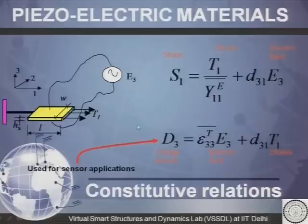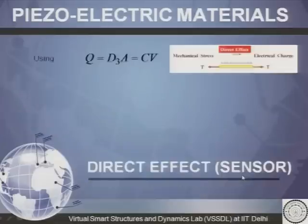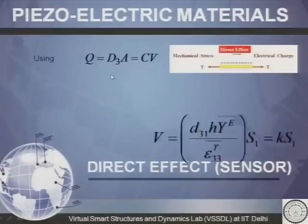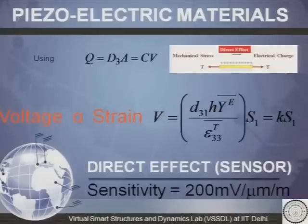This equation is used for the sensor application. When the piezoelectric material is used as a sensor, this equation is used, and when E₃ is 0 — when there is no electric field — only stresses are being produced and the equation reduces accordingly. Using the basic relation, the voltage generated by the piezoelectric material is given by this relation in the direct effect — voltage is directly proportional to the strain. The sensitivity of piezo material is 200 millivolts per micrometer per meter.